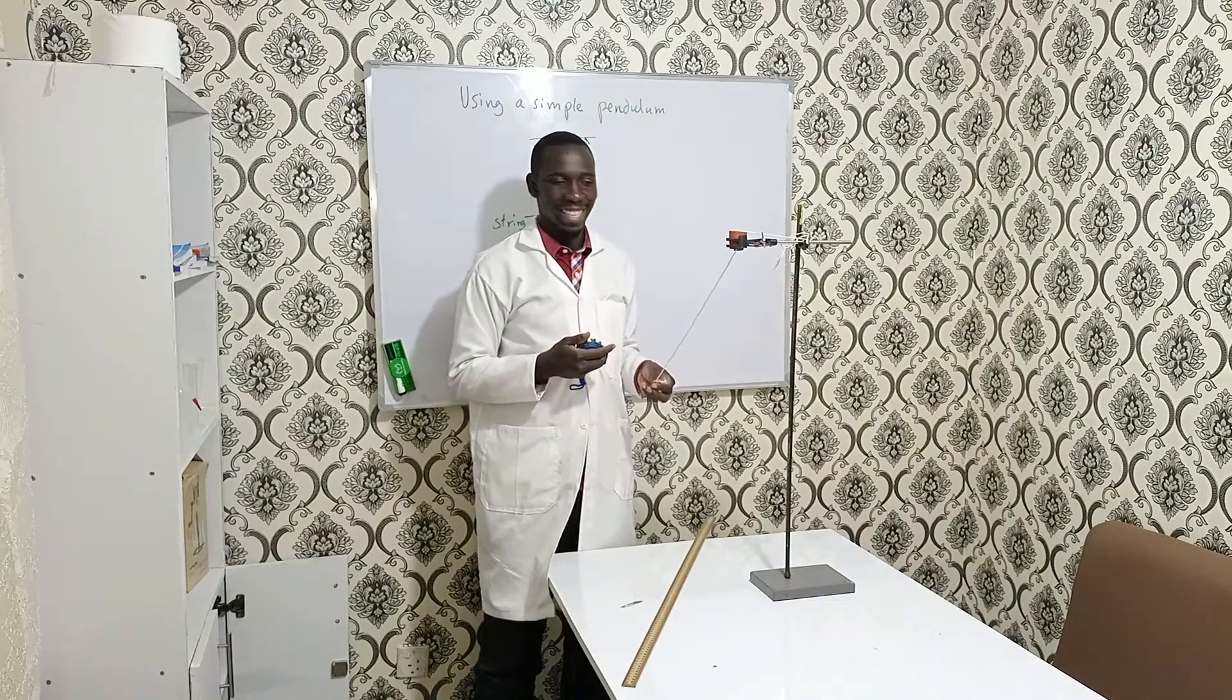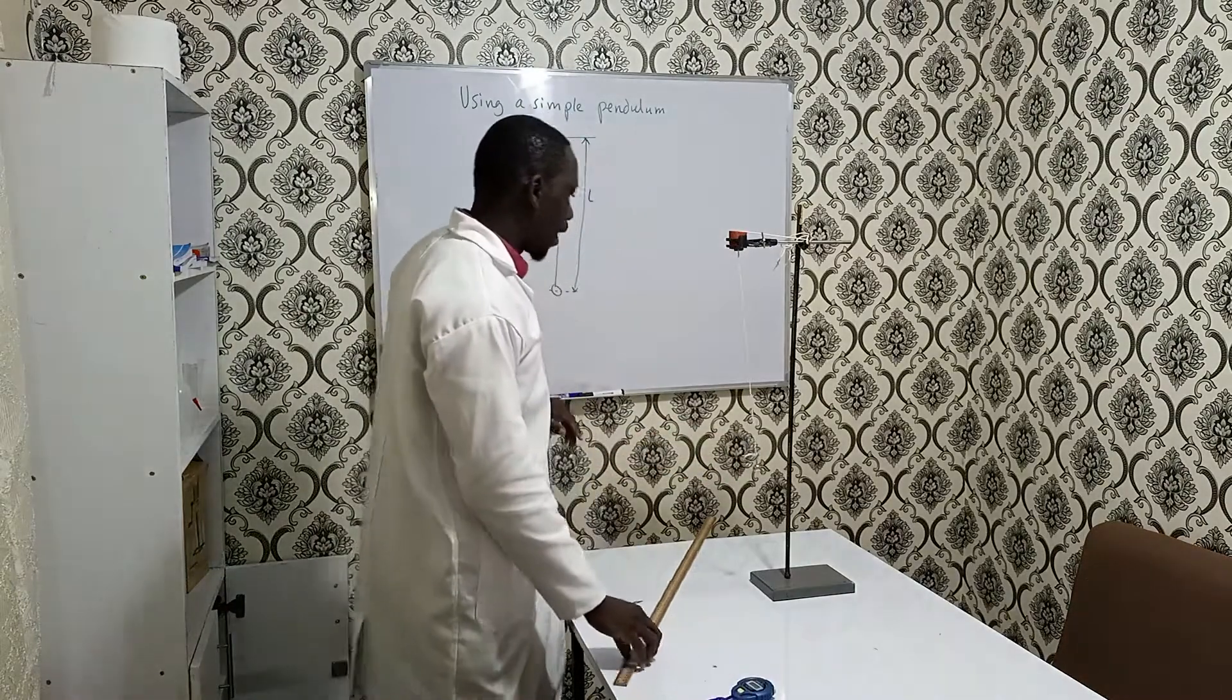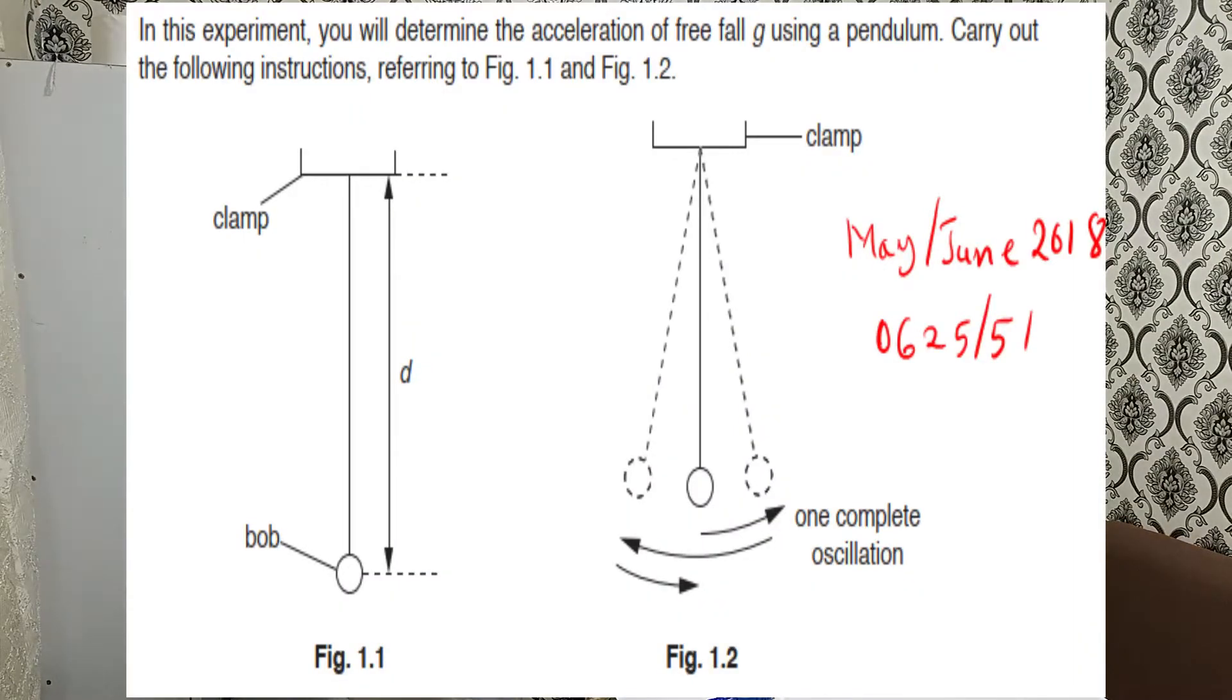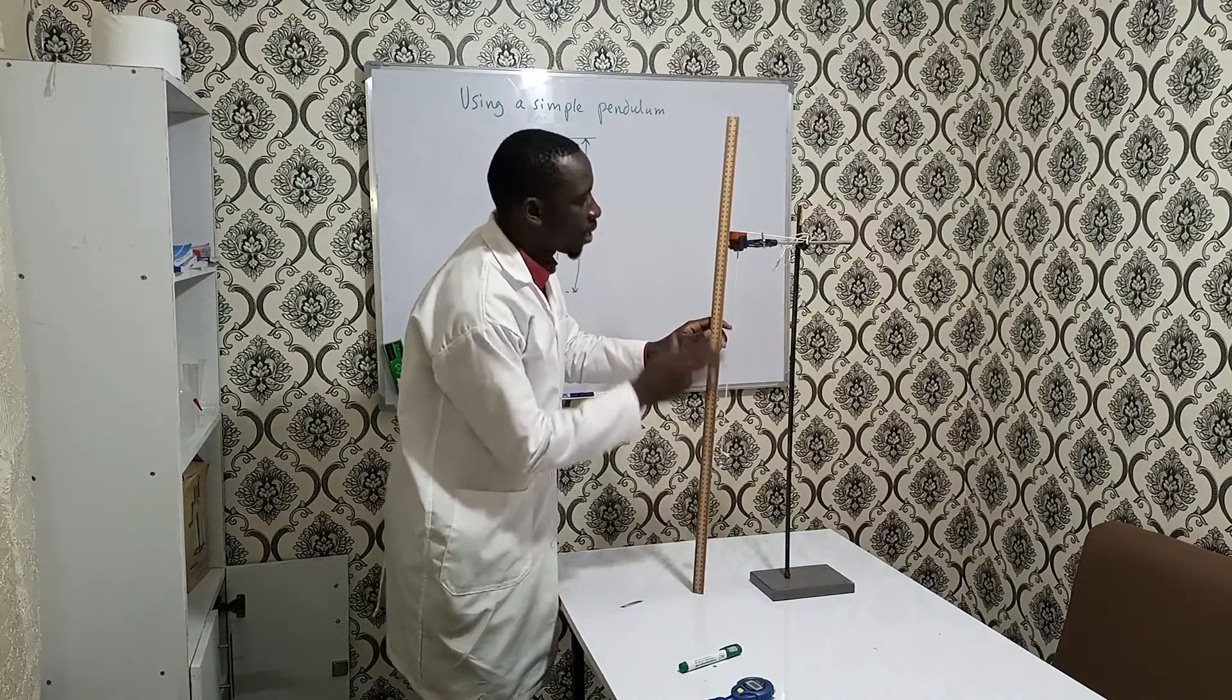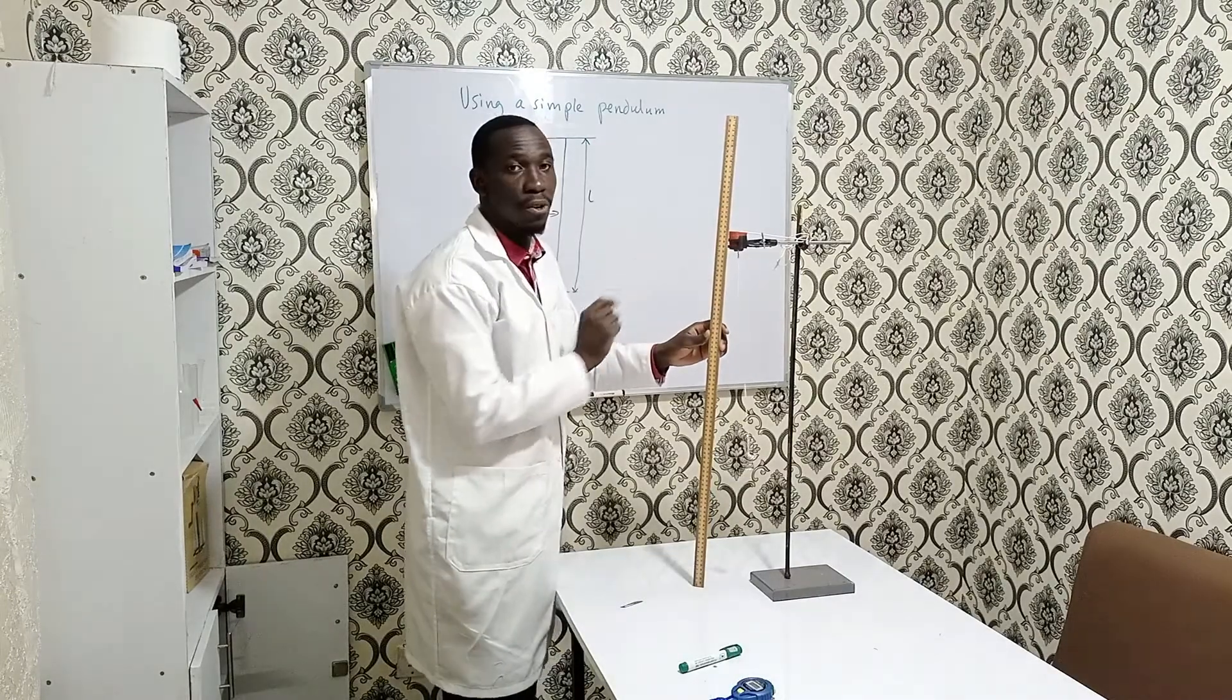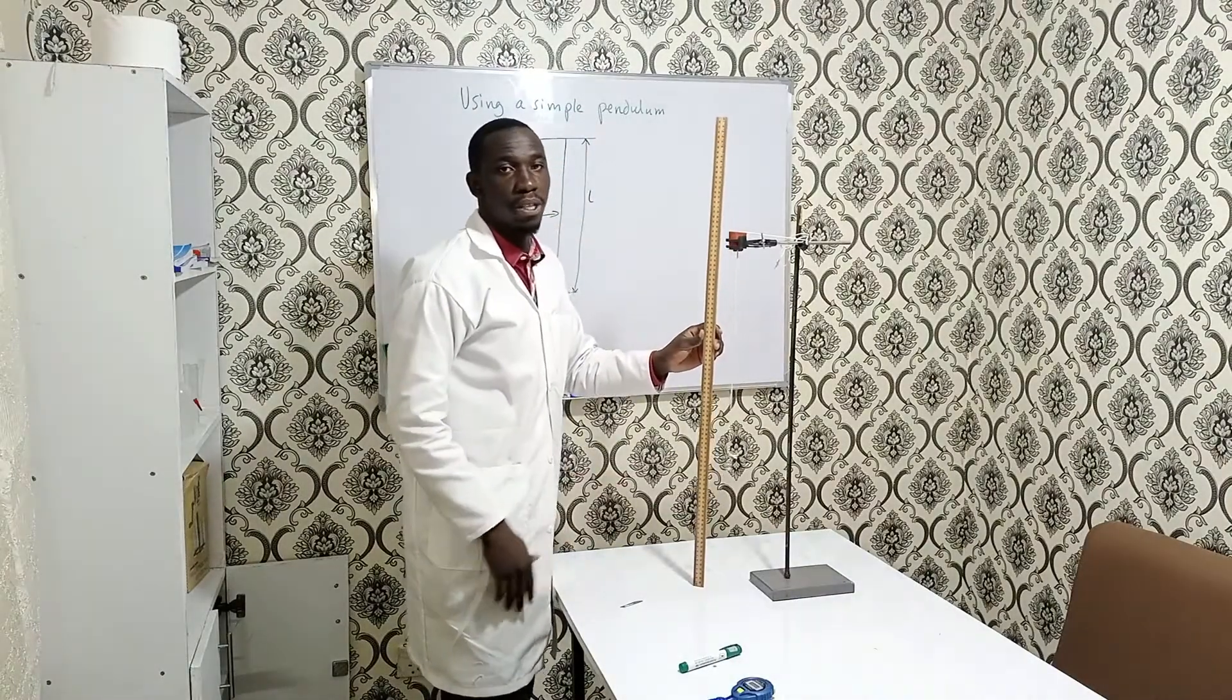Now, one challenge is how to measure the length of the string. You will find a setup shown to you where you're supposed to measure the length from here to the center of the bob. If I take measurement from this point, I'll have to subtract because it doesn't start from zero. I'll have to know the measurement at this point and at this point, and that can be confusing.